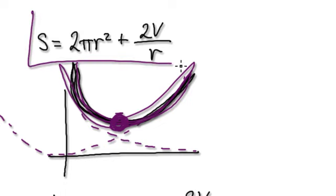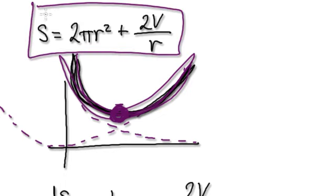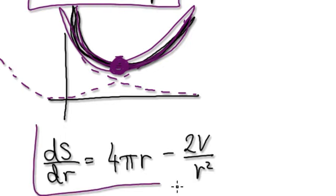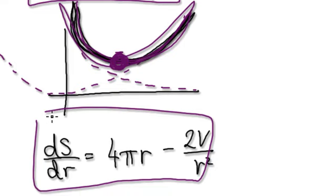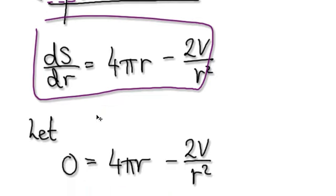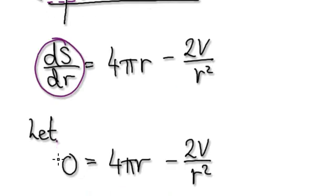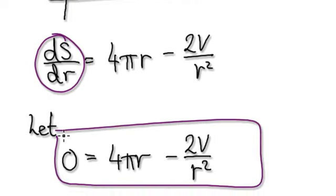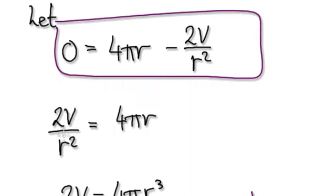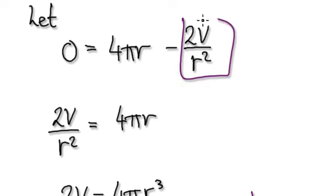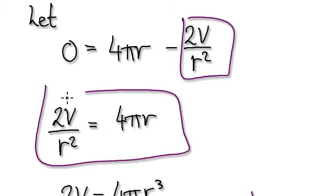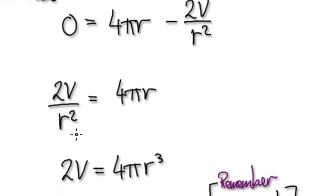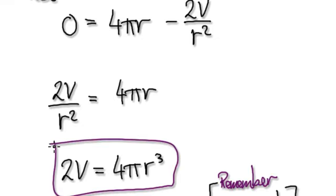So if you want to know the minimum point, differentiate this. That will then give you this. Now set the gradient to be zero. Set this to be zero. That will then take you to here. And then add this block to both sides. That will then give you this. Times both sides by R squared. That will then give you this.